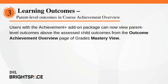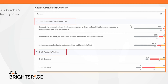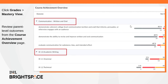Users with the Achievement Plus add-on package can now view parent-level outcomes above the assessed child outcomes from the Outcome Achievement Overview page of Grades Master Review. Navigate to Grades and then click Master Review. Review parent-level outcomes from the Course Achievement Overview page.